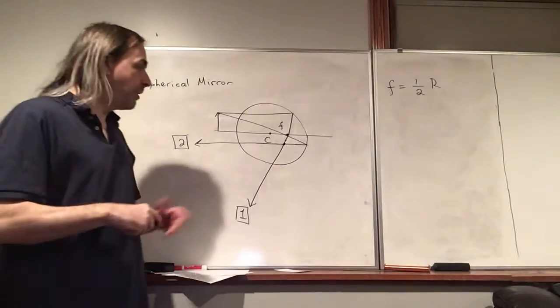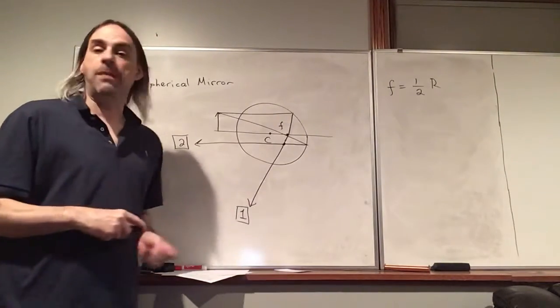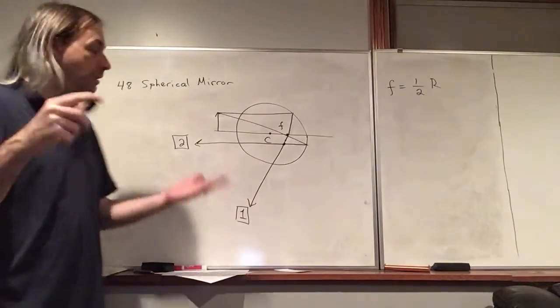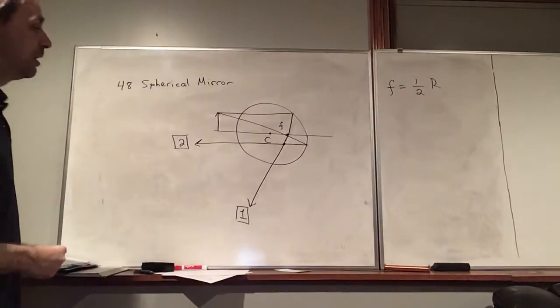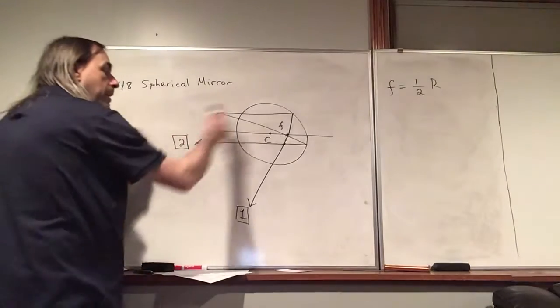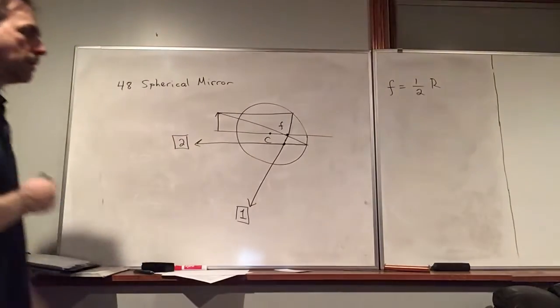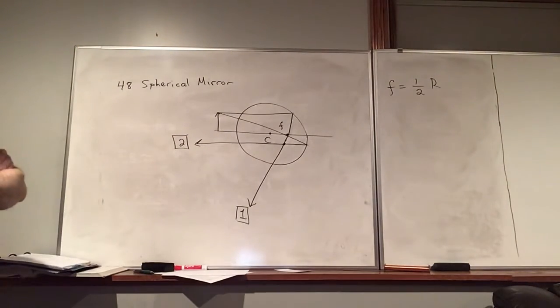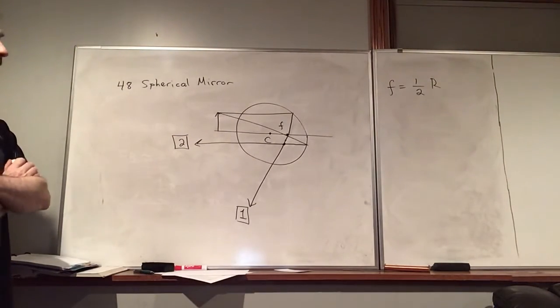There's another ray we can draw. If we draw a ray that passes through the focal point, when it hits the mirror it's going to bounce back parallel to the principal axis. So we're going to call that ray two. And we can see that these two converge at this point — that's where our image is going to be. In theory we could just stop here and say we know where these two rays converge.